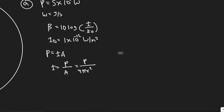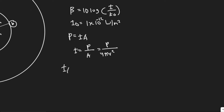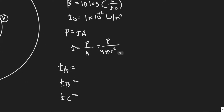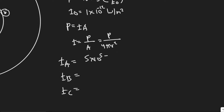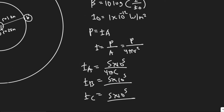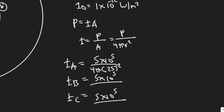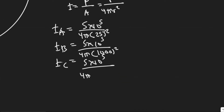I'm going to solve for iA, iB, and iC for each of the parts. The power is the same for all: 5 times 10 to the 5, divided by 4πr² where the radius changes. For part A, the radius is 25 meters; for part B, it's 1 kilometer, which is 1,000 meters; and for part C, it's 7.5 kilometers, which is 7,500 meters.